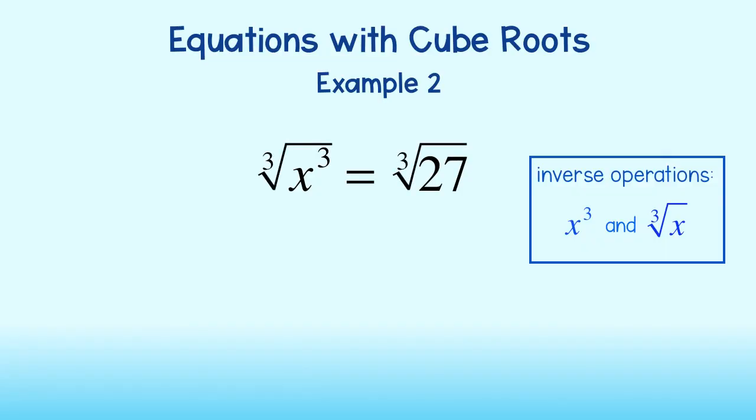Taking the cube root of both sides will undo the cube and leave us with just x on the left-hand side. The cube root of 27 is equal to 3. And there we have it, x is equal to 3.